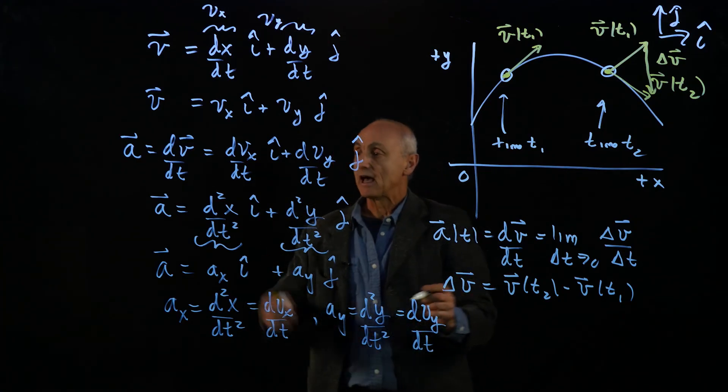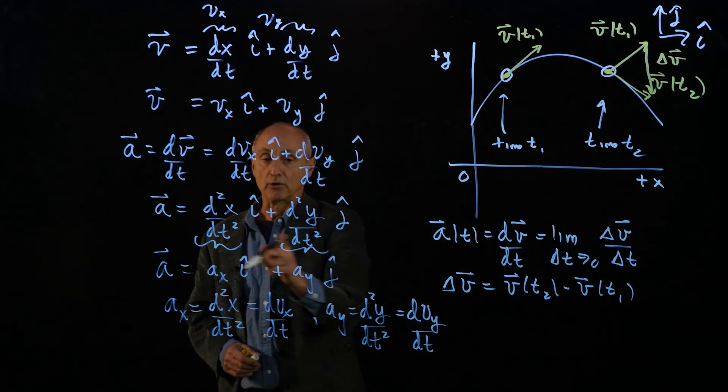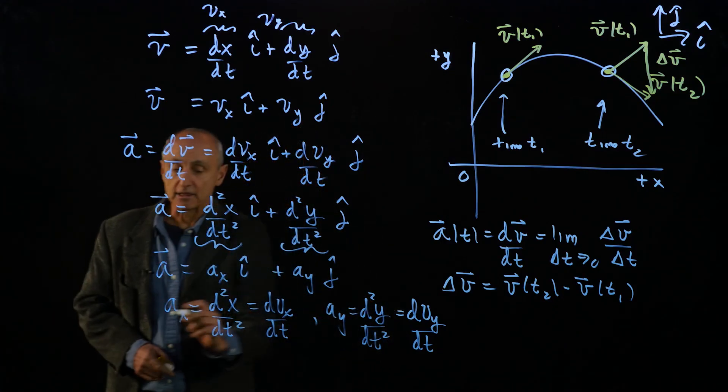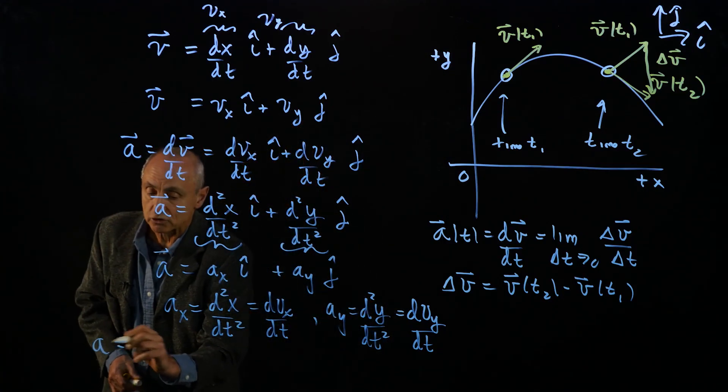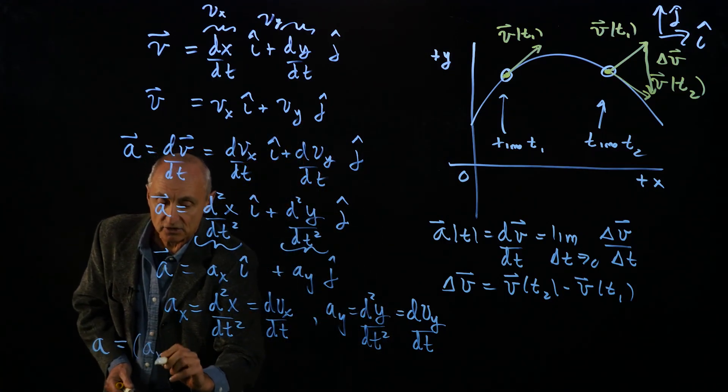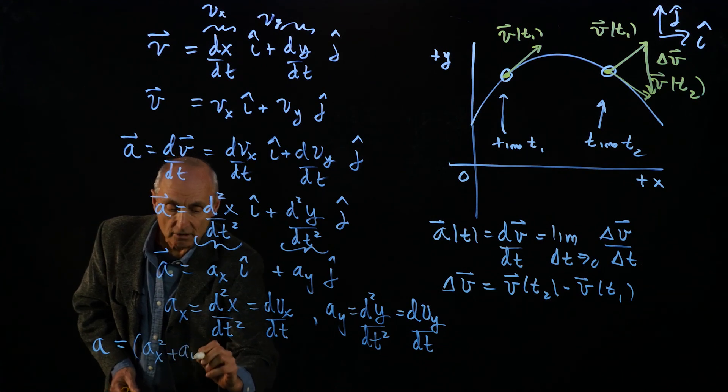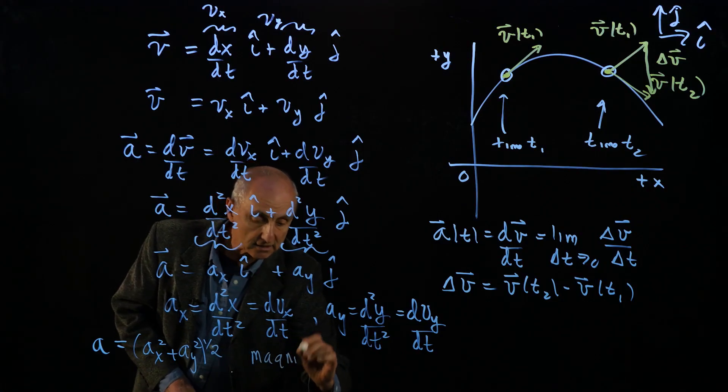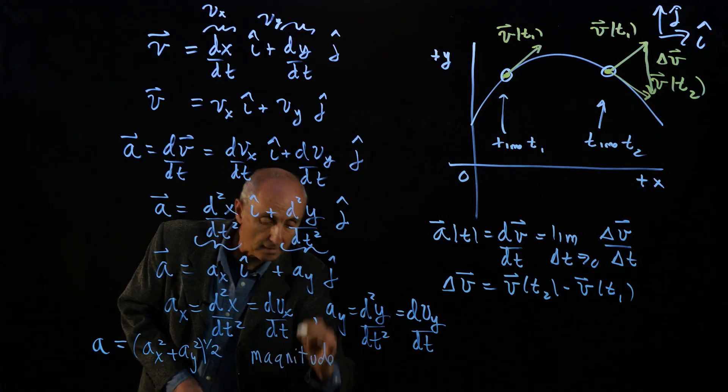And that's how we describe the acceleration. As before, we can talk about the magnitude of the vector and the magnitude of a. We'll just write as a. It's the components squared added together, taken square root. And that's our magnitude.